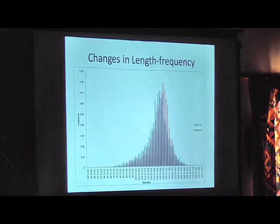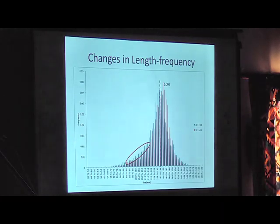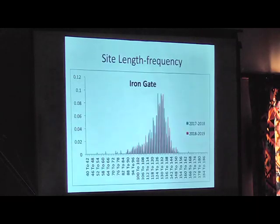I want to quickly talk about some of the changes in length frequency that we're seeing. This data covers all the sites over those two survey periods — the blue is the baseline and the red is the following season. Two things to point out: we're seeing a slight phase shift in a positive direction, showing fish growing through over the two survey periods. We are also seeing a slight gap where we're not detecting as many emergent pāua in the second time period, which means we're potentially seeing a gap in recruitment that we're hoping will fill in as we see more spawning and juveniles coming through.